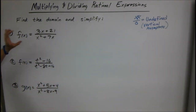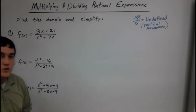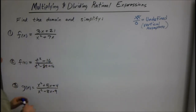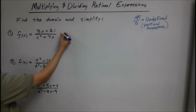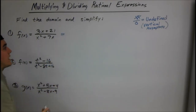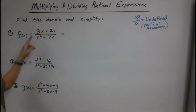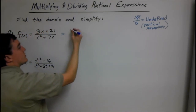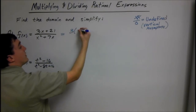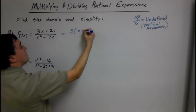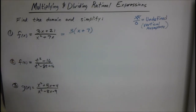So, we're simplifying this and finding the domain. Whenever you're simplifying, you have to factor these things first. To factor, we look at what they have in common. These two have a greatest common factor — 3 and 21. 3 goes into both of those, so we can take out 3 and we have x plus 7 left.